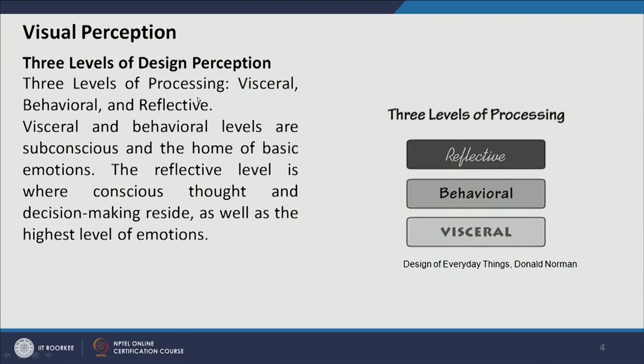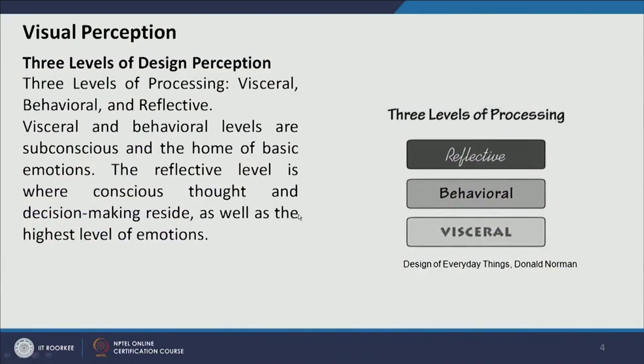Norman also tells us there are three different levels of perception: visceral, behavioral, and reflective. Visceral and behavioral levels are subconscious — they happen instantaneously without much level of cognition. The reflective level is where conscious thought, decision-making, and the highest level of emotions are involved, along with social and cultural background.